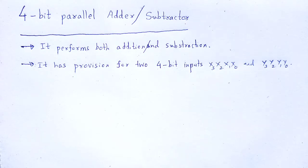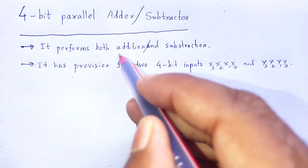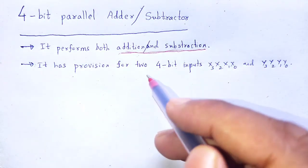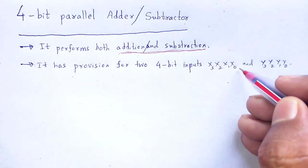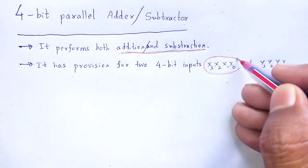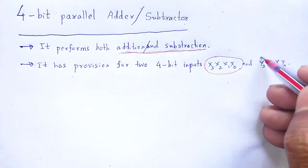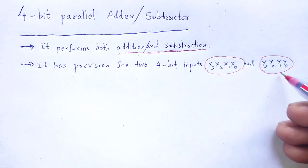How we perform that kind of action by using the 4-bit parallel adder-cum-subtractor? It is an arithmetic circuit which performs both addition and subtraction. It has the provision for two 4-bit inputs: one 4-bit input x3, x2, x1, x0, and another 4-bit input y3, y2, y1, y0.